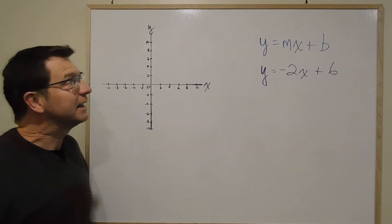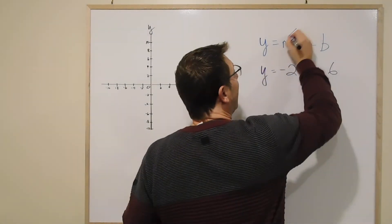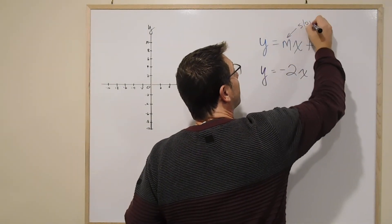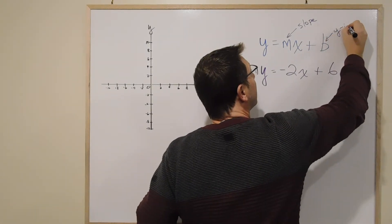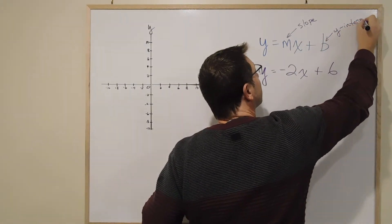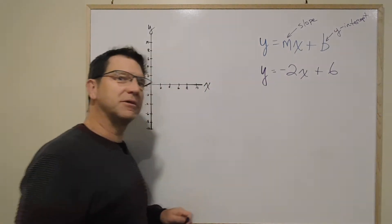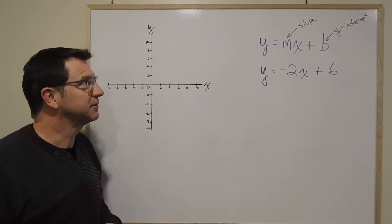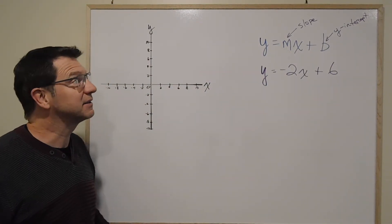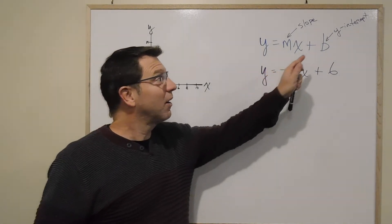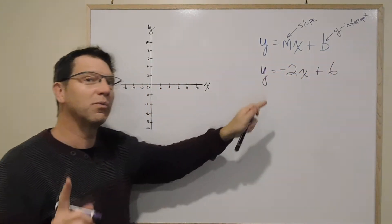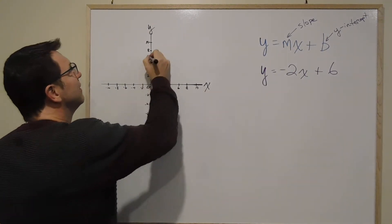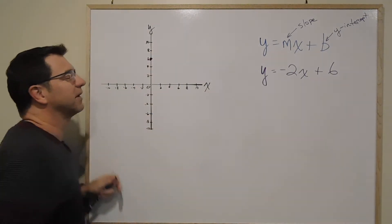So what we know is this m is our slope and this b is our y-intercept. Now remember, an intercept is where it crosses the axis. So if we know that our y-intercept is b, well we know it's 6. So it crosses the y-axis at 6. Bingo. I'll just put a point right there. That's 6.